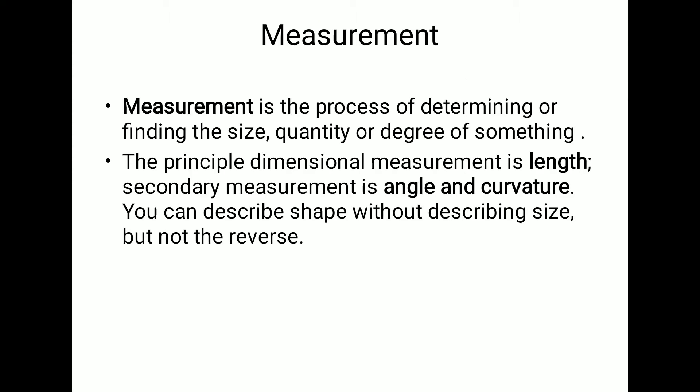To start with, let us first understand what is meant by measurement. In the previous lecture also we have seen what is meant by measurement. Measurement is the process of determining or finding the size, quantity or degree of something. The principal dimensional measurement is length. Secondary measurement is angle and curvature. Here you can describe the shape without describing the size, but you cannot reverse the statement.